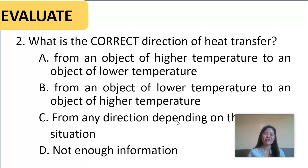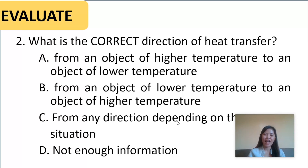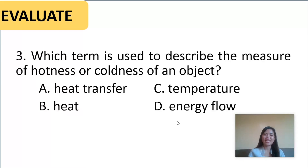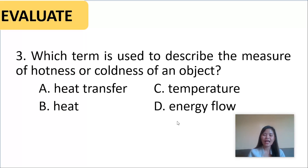Number two: what is the correct direction of heat transfer? A — from an object of higher temperature to an object of lower temperature, B — from an object of lower temperature to an object of higher temperature, C — from any direction depending on the situation, or D — not enough information. Number three: which term is used to describe the measure of hotness or coldness of an object? A — heat transfer, B — heat, C — temperature, or D — energy flow.